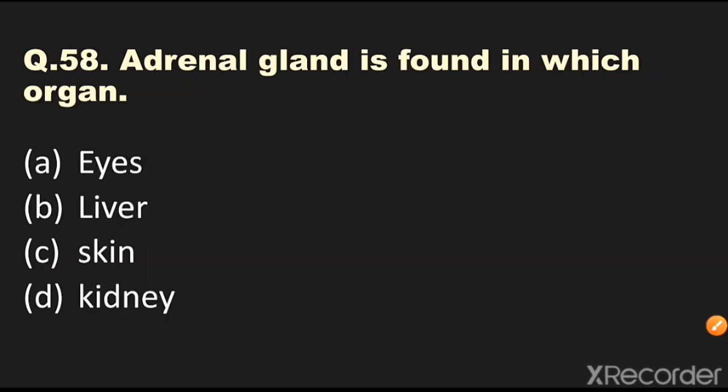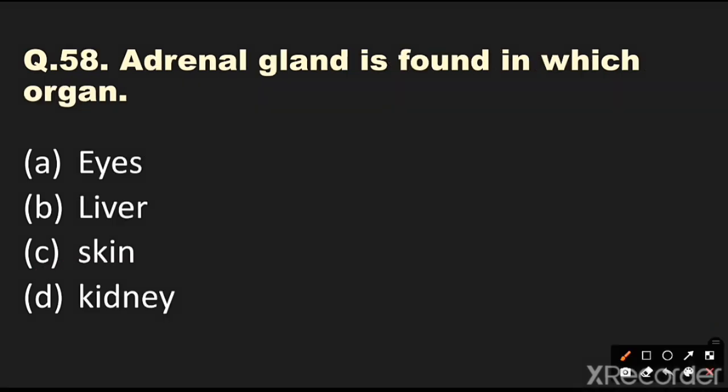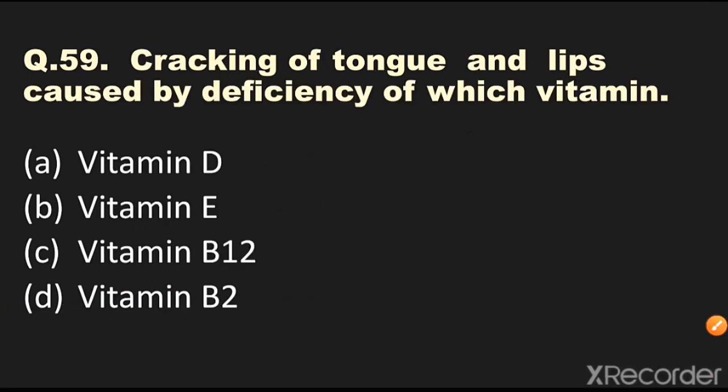Question number 58: Adrenal gland is found in which organ? Options are eyes, liver, skin, or kidney. The answer is kidney — adrenal gland is located in the kidney.